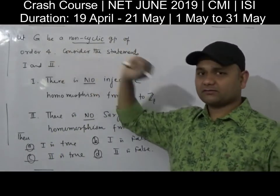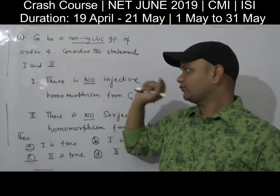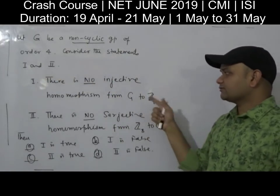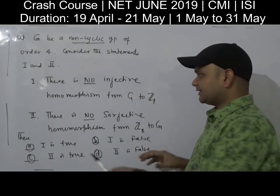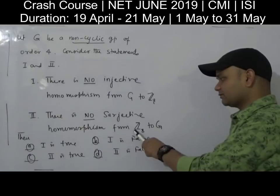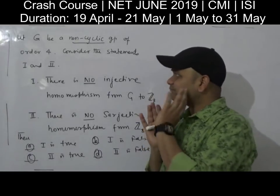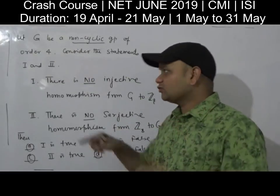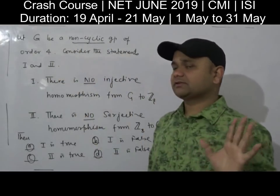Let G be a non-cyclic group of order 4, and consider two statements. Statement 1: There is no injective homomorphism from G to Z8. Statement 2: There is no surjective homomorphism from Z8 to G. So the question is to determine the truth of these two statements.